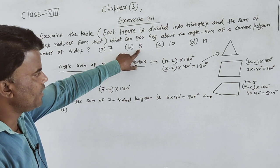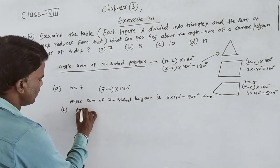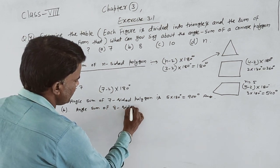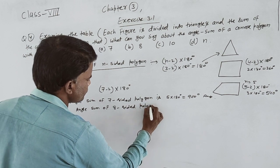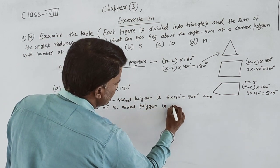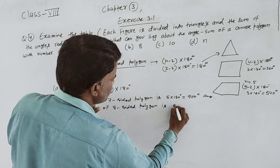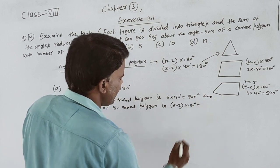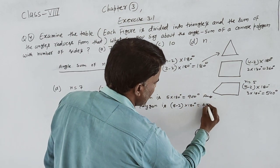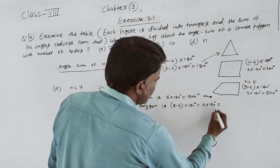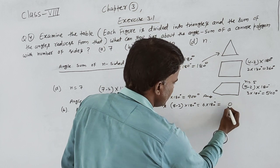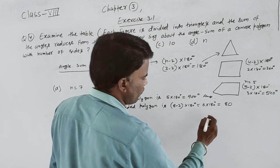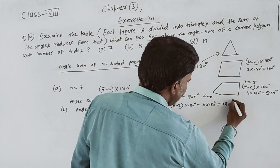B part को discuss करते हैं। B part में number of sides है 8। तो angle sum of 8-sided polygon है: 8 minus 2, multiply 180 — 6 multiply 180। Calculate करेंगे: 6 को 180 से multiply करेंगे — 6×8=48, carry 4 — 6×1+4=10 — 1080 degrees।